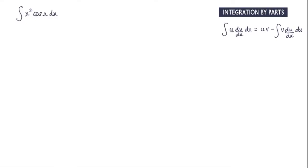In this question we want to find the integral of x squared cos x dx and we're going to be using integration by parts. Over here you can find a quick reminder of the formula to use.